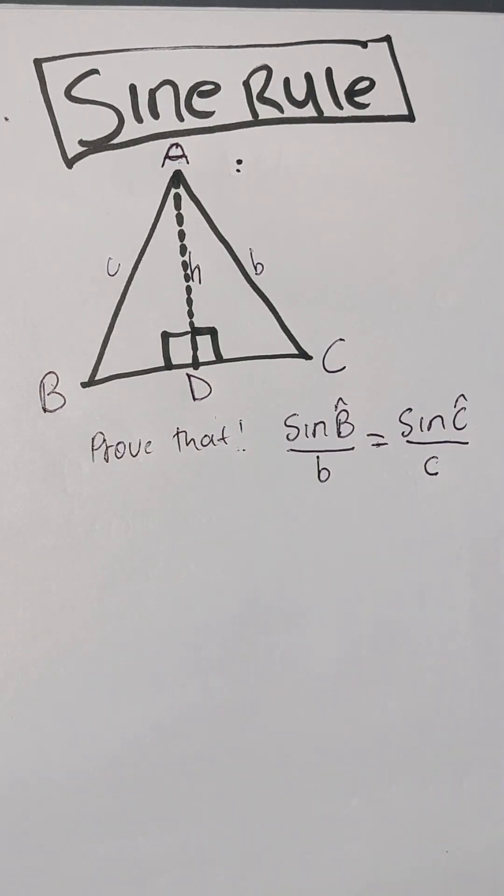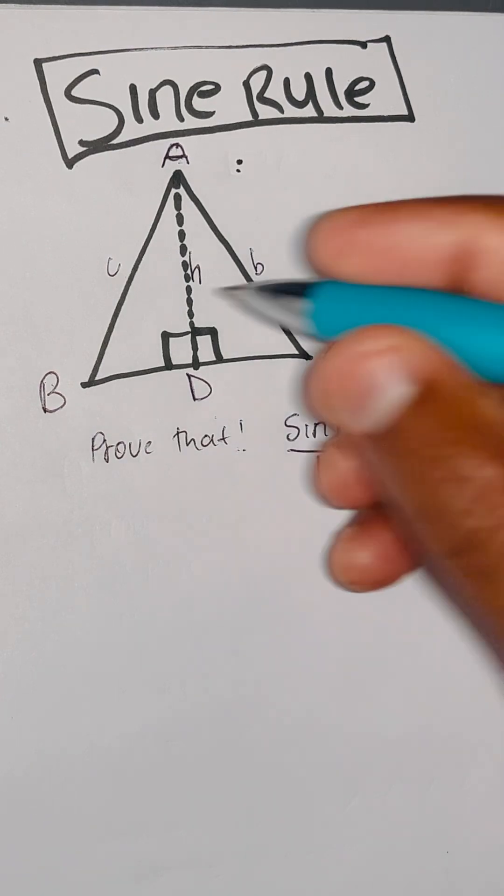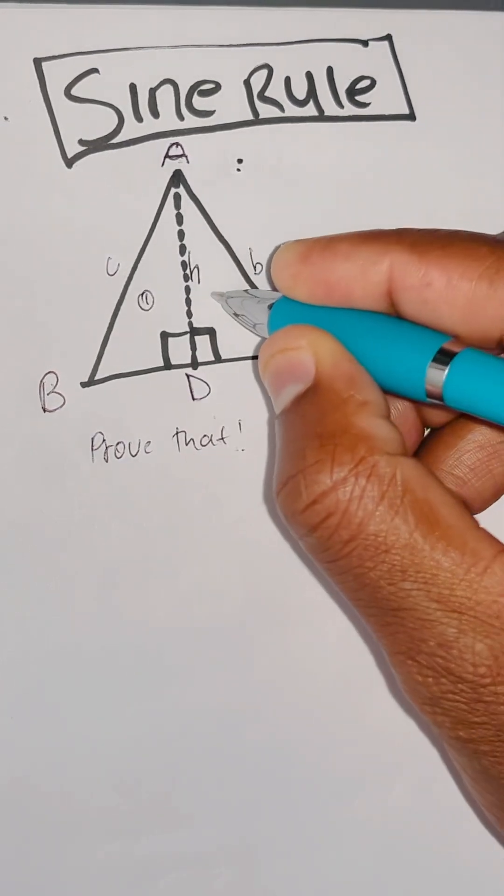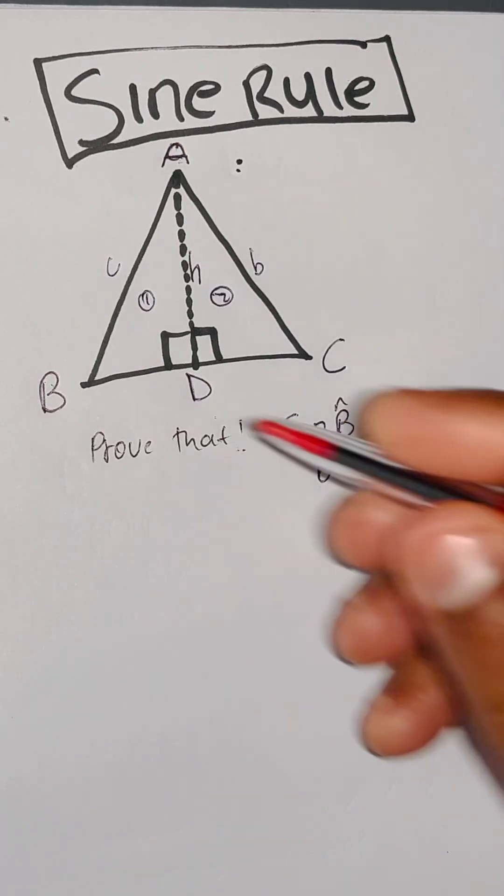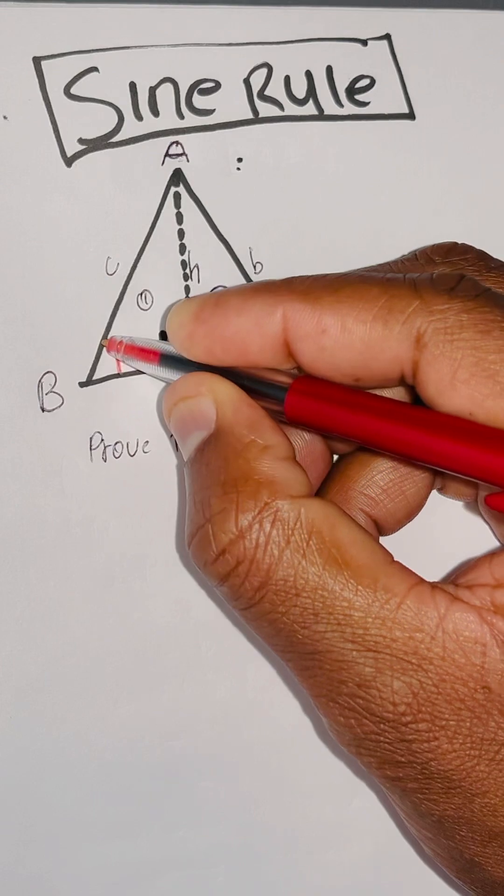So now you have two triangles, triangle number one, triangle number two. So now you can prove, you start by triangle number one.